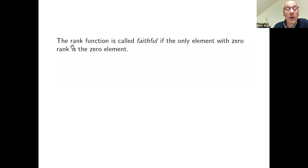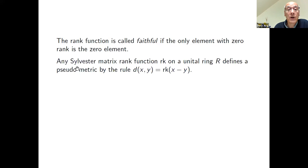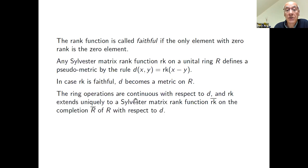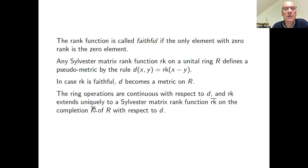A rank function is called faithful if the only element with zero rank is the zero element. Given any Sylvester matrix rank function on a unital ring, one can define a pseudometric by d(a,b) = rank(a - b), which becomes a metric when the rank is faithful. The ring operations are continuous with respect to this pseudometric, and the rank extends uniquely to a Sylvester matrix rank function on the completion with respect to this pseudometric.